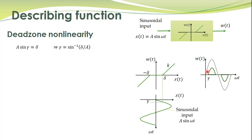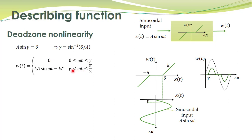Now, how do we find the expression for w(t)? For ωt between 0 and γ, w(t) is equal to 0. For ωt between γ and π/2, the output follows the linear portion. That expression comes from the equation of a straight line — what is the equation of this straight line?